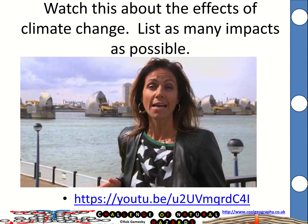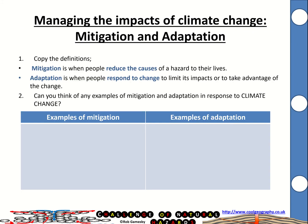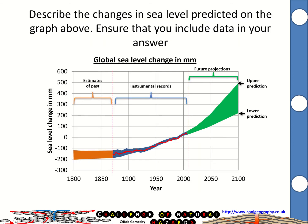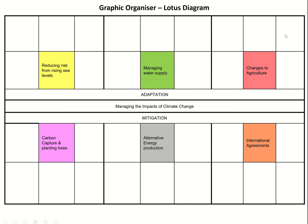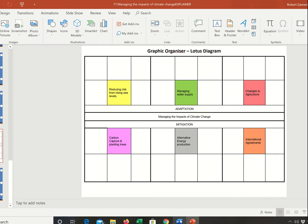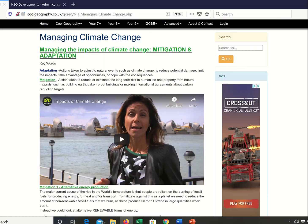For your tasks: watch the Met Office video on the effects of climate change, write definitions for mitigation and adaptation with examples of both, describe the change in sea level shown in the graphic, and complete an infographic on mitigation and adaptation using the graphic organiser provided. Try to explain and give examples of each adaptation and mitigation technique in each box. There's also a worksheet and the Managing Climate Change page at Coolgeography to help you.